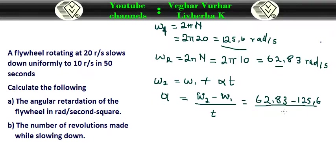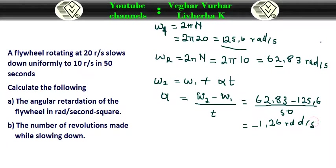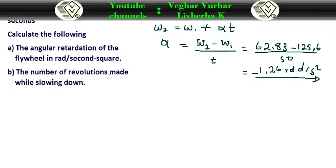The flywheel slowed down in 50 seconds, so substituting those values we get negative 1.26 radians per second squared. This negative value confirms it is a retardation. Now we will calculate the number of revolutions.